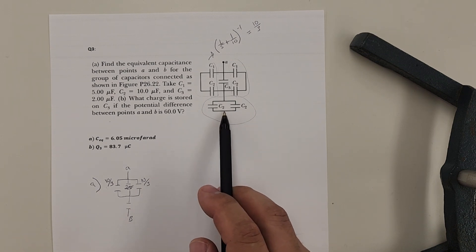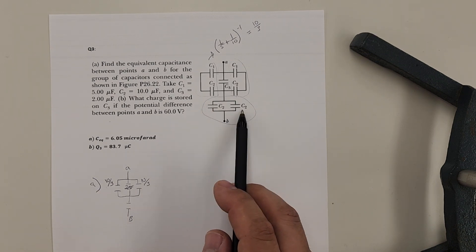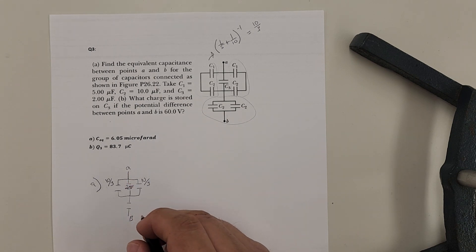This one makes it nice and easy. This is a parallel circuit. So C2 and a C2, they're each ten. Which makes this bottom one a twenty.